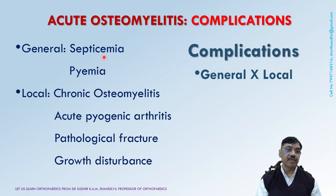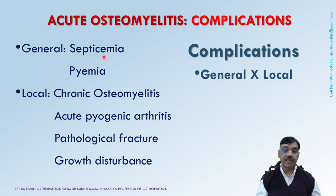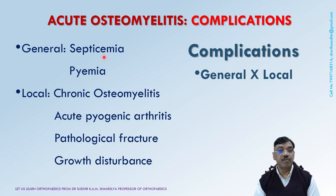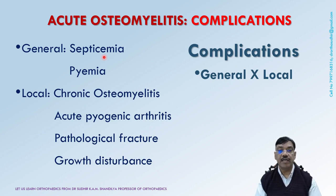The second local complication is acute pyogenic arthritis, which occurs in a joint where the metaphysis is intra-articular — for example, the hip with the upper femoral metaphysis, or the shoulder with the upper humeral metaphysis. The third local complication is pathological fracture, which occurs through a bone weakened by disease or by the window made during surgery. It can be avoided by adequate splinting of the limb. The fourth important complication is growth plate disturbance. The growth plate may be damaged, leading to either complete or partial cessation of growth. Sometimes there may be hypergrowth. This may result in shortening, lengthening, or deformity of the limb.